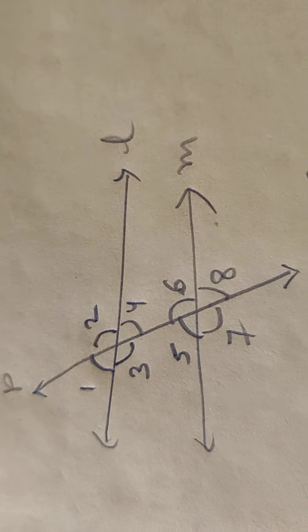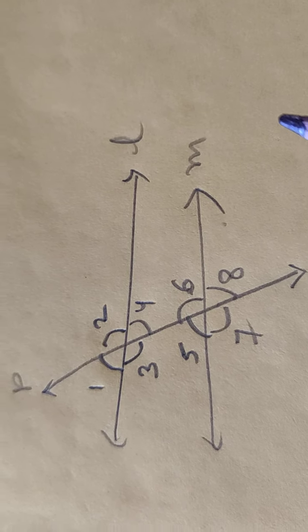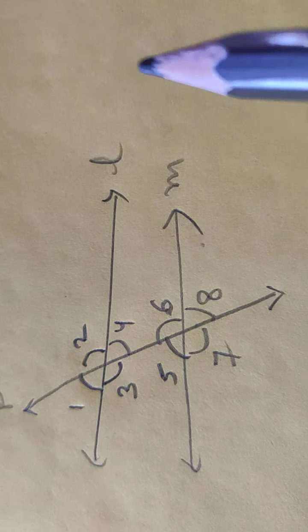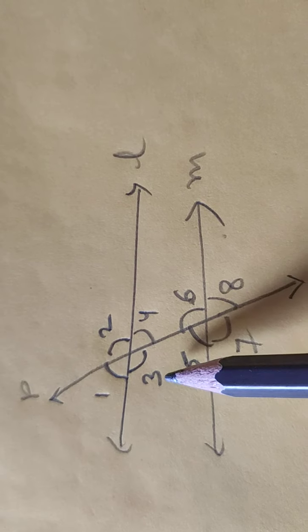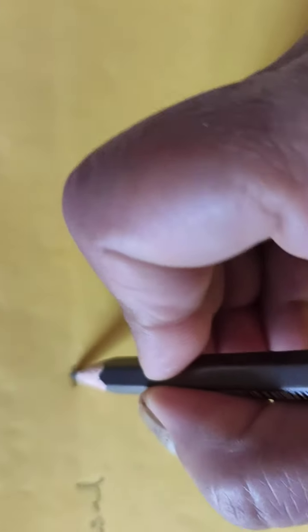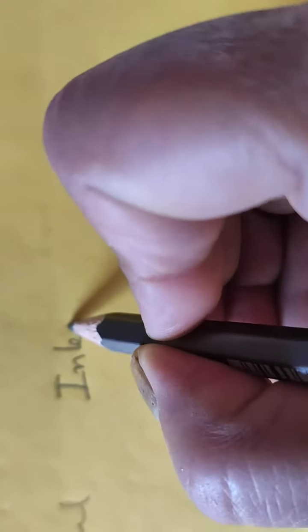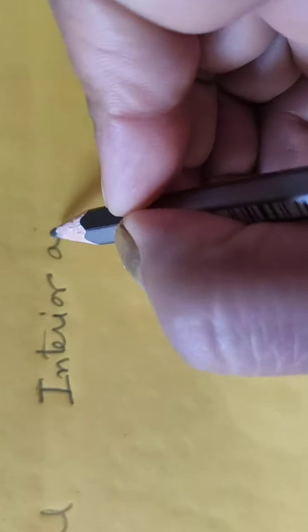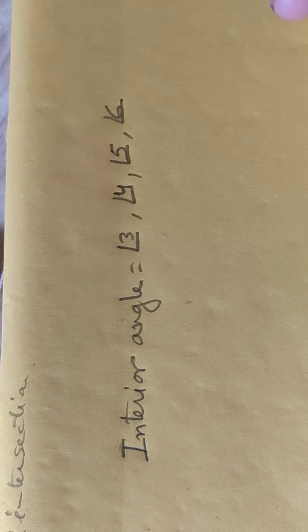Now, if I ask you what are the interior angles — interior angle means which falls inside the figure — so these are the interior angles: three, four, five and six. The interior angles are equal to angle three, angle four, angle five and angle six.